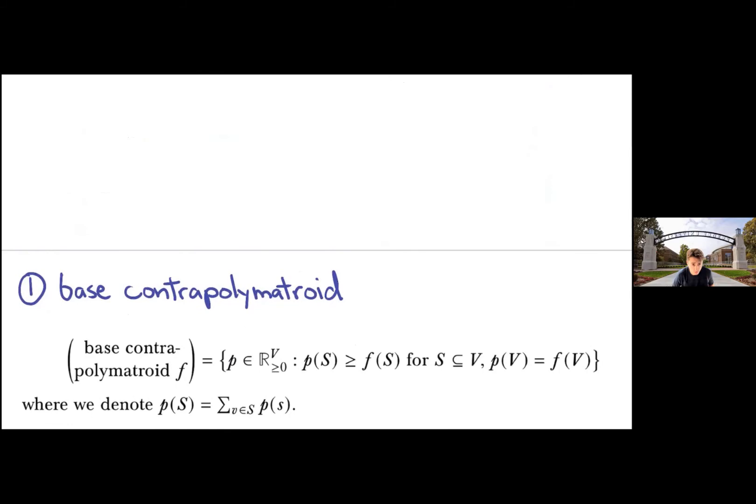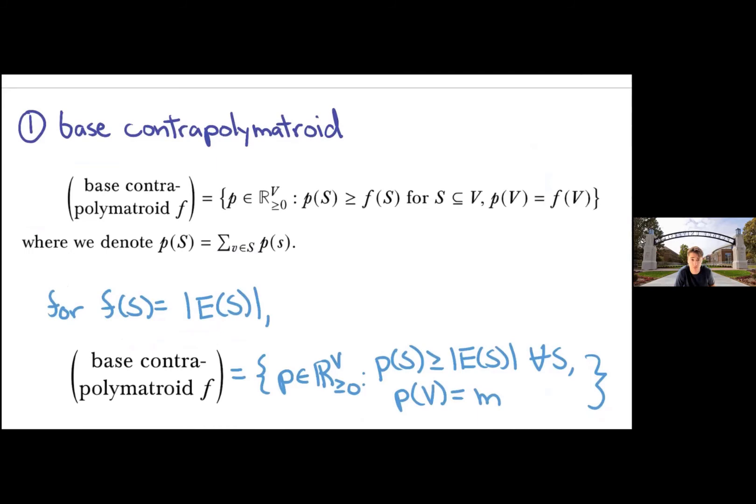So what comes next? The next part is we'll invoke some kind of textbook classical optimization aspects. So I need to introduce the base contrapolymatroid of a supermodular function. These are non-negative vectors. If I think about it as a set function, the weight of a set is dominating F while keeping the whole sum the same.